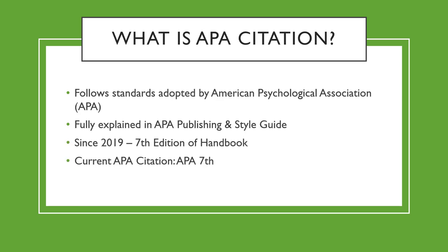What is APA citation? The APA citation style is laid out in the APA Publishing and Style Guide, which follows its standards adopted by the American Psychological Association, hence the acronym. The citation style is used most commonly by programs in the social sciences, such as psychology, linguistics, sociology, economics, and criminology, as well as some business and nursing programs. As of 2019, the APA handbook is in its 7th edition, so the version of APA citation we will be covering in this video is APA 7th.